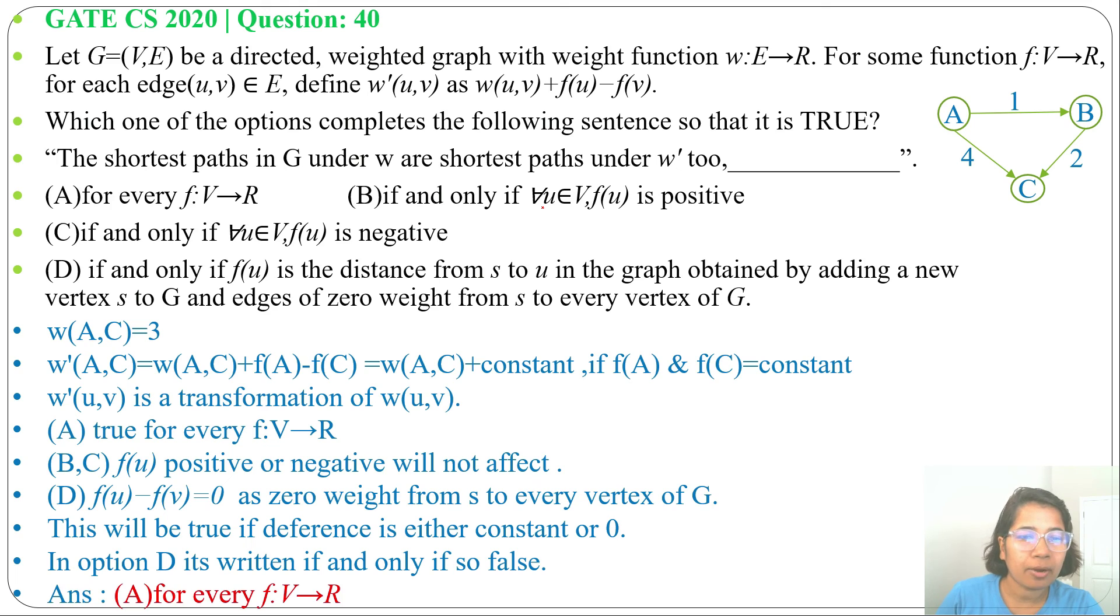So answer will be option A. The shortest paths in G under W are shortest paths under W' too, for every F: V tends to R. I already discussed shortest path, just go through that. And if this lecture is helpful for you, please like, share, and subscribe. Thank you.